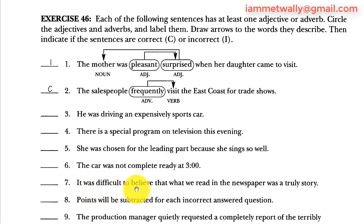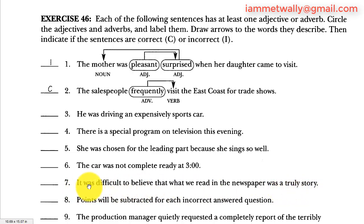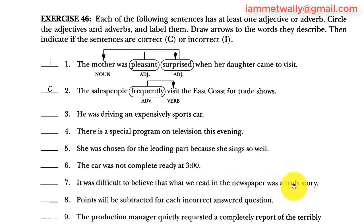Number seven: 'It was difficult to believe that what we read in the newspaper was a truly story.' It is the subject, was is the verb, difficult describes the pronoun it. Truly is an adverb and should describe a verb, but there is no verb here — only the noun story. It should be true story. So this is incorrect.